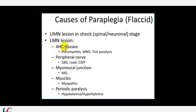Myoneural junction, myasthenia gravis, proximal myopathy, and periodic paralysis — hypokalemia and hyperkalemia — all produce lower motor neuron type paralysis. In myoneural junction, muscular, and periodic paralysis conditions, nerve conduction studies will be normal, unlike in peripheral nerve damage. Muscle involvement is identified by biopsy or EMG. Importantly, sensory symptoms will be absent in myoneural junction and muscular disorders — this should always be kept in mind.